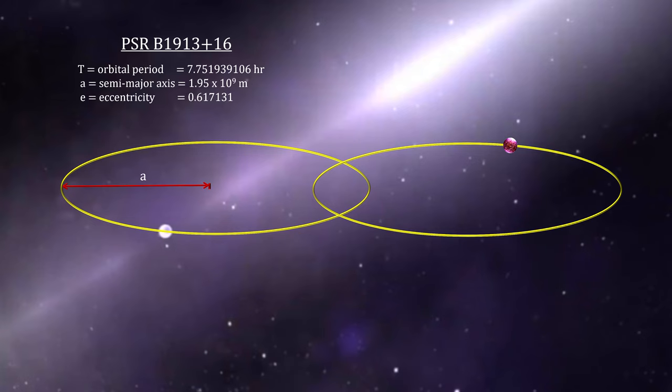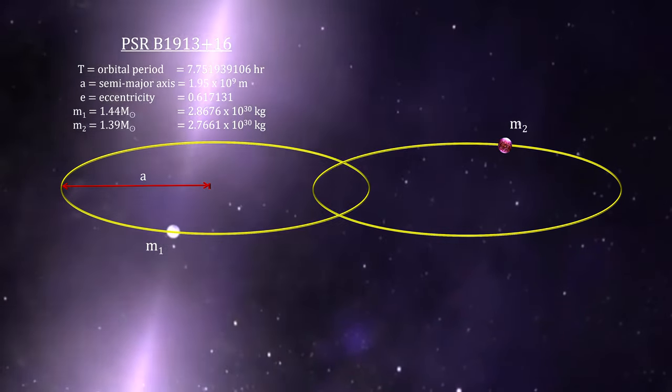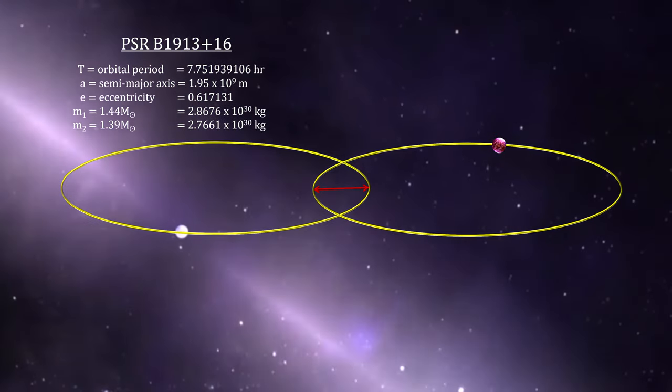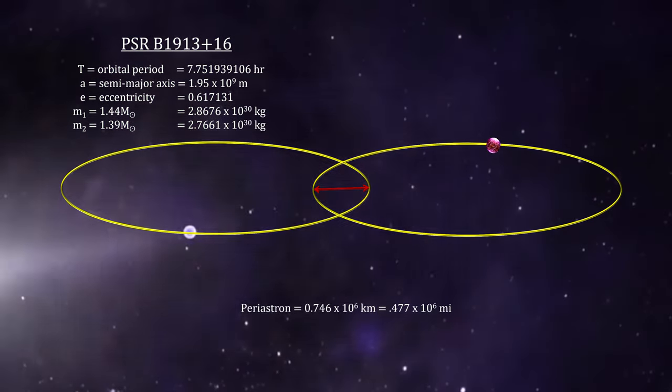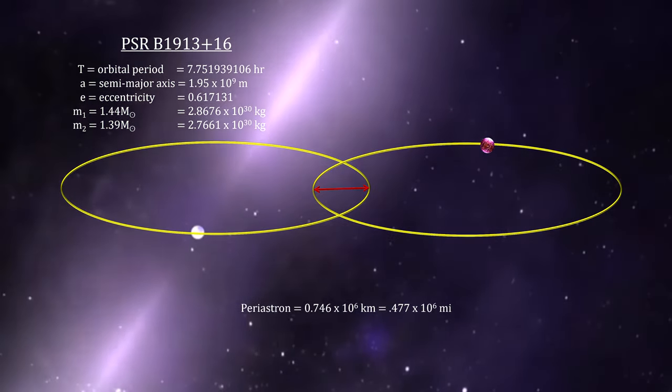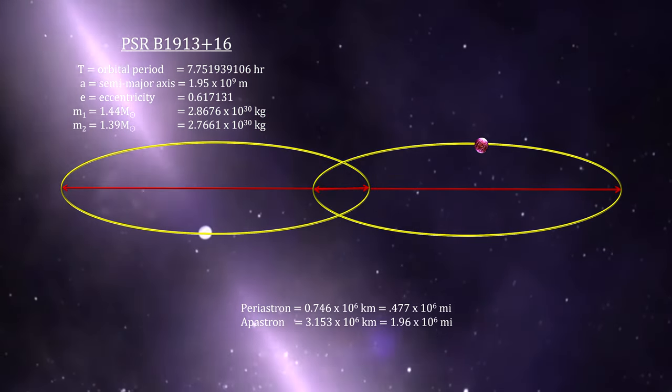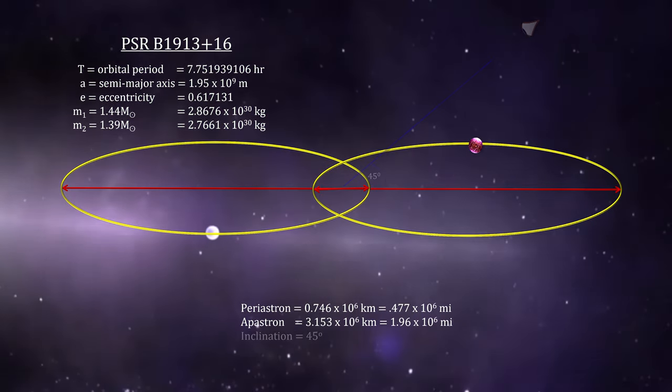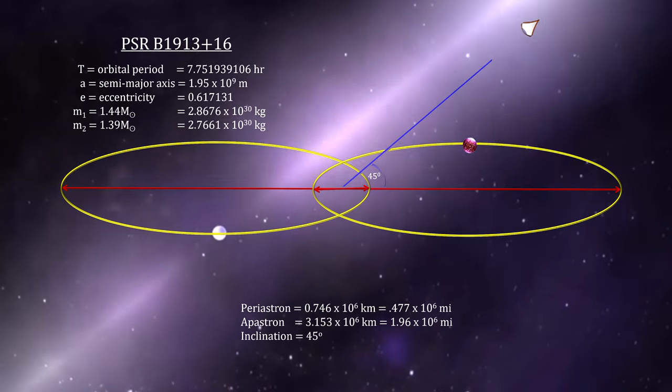This was the first binary neutron star ever discovered. Using the orbital motion, they calculated the star's masses, their closest approach called periastron, and their furthest distance apart called apastron, as well as the system's inclination.